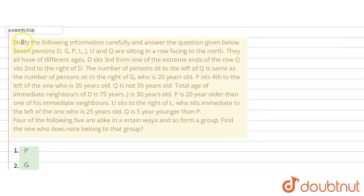The question says, study the following information carefully and answer the questions given below. Seven persons D, G, P, L, J, U, Q are sitting in a row facing north. They all have different ages.